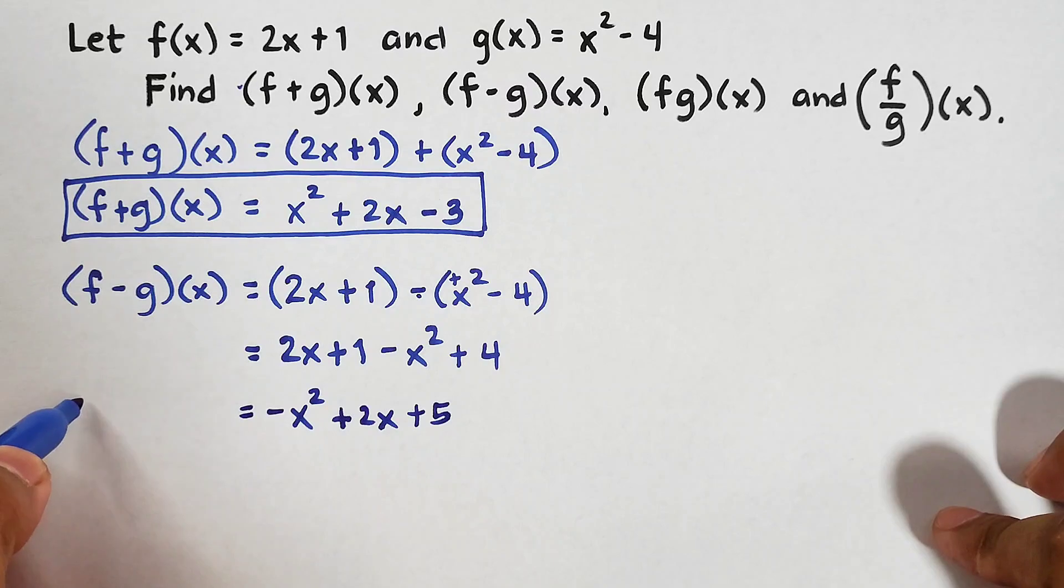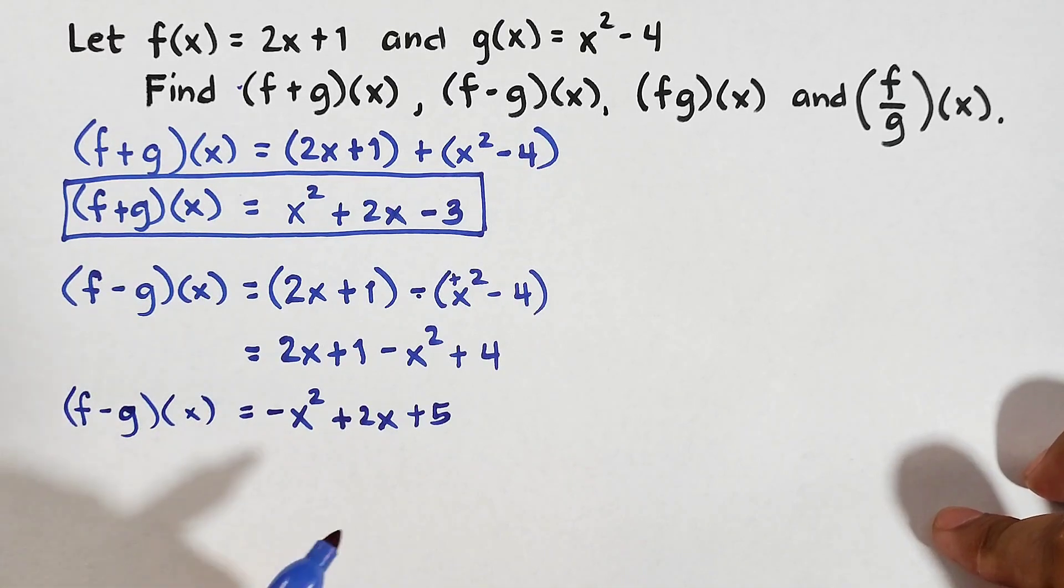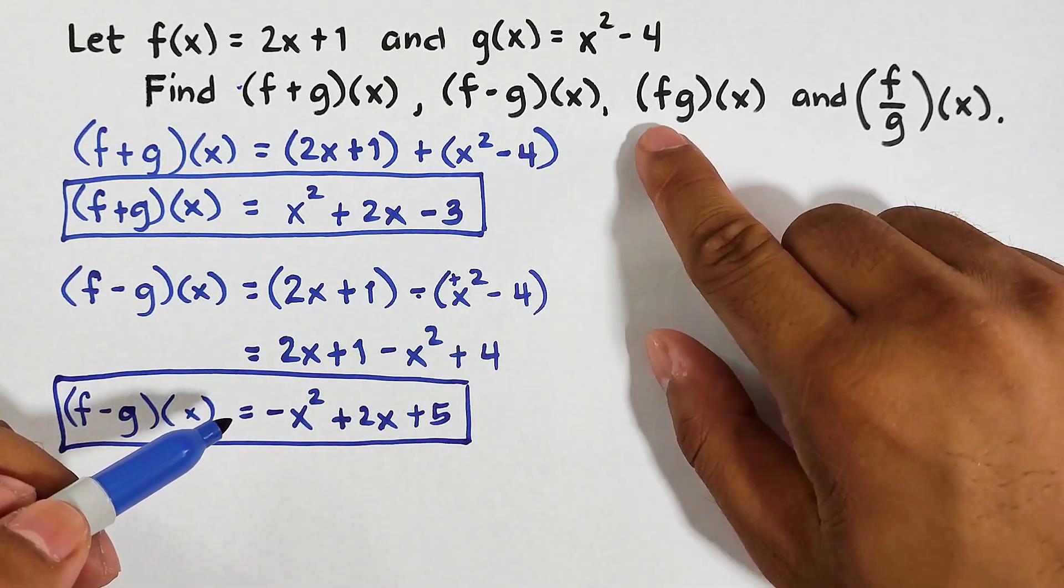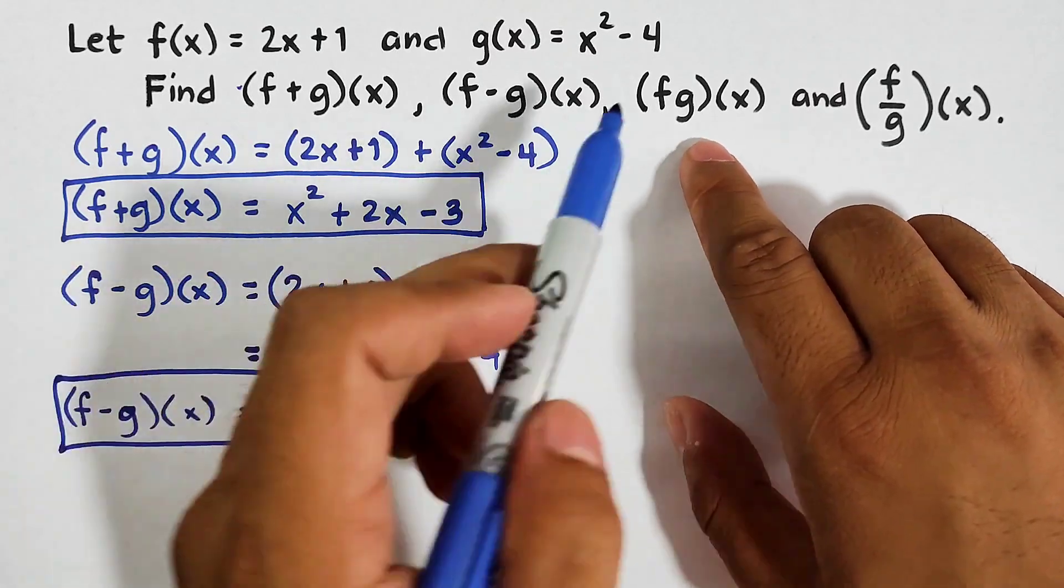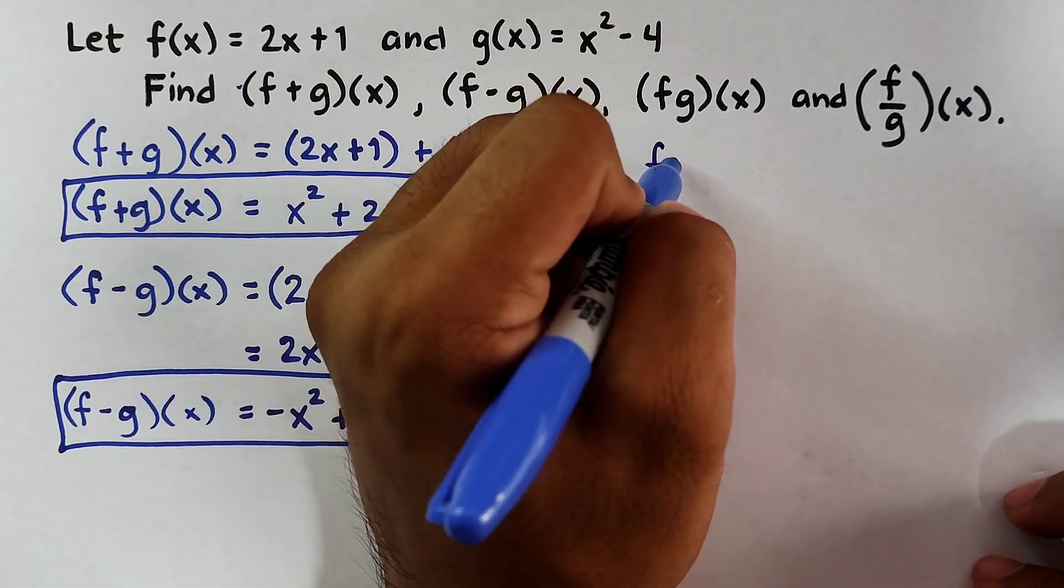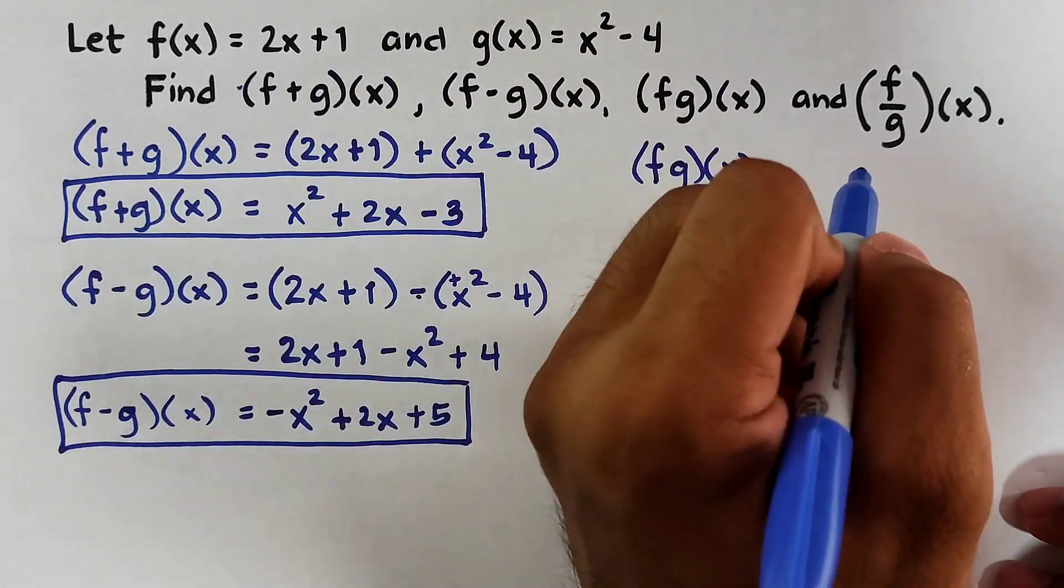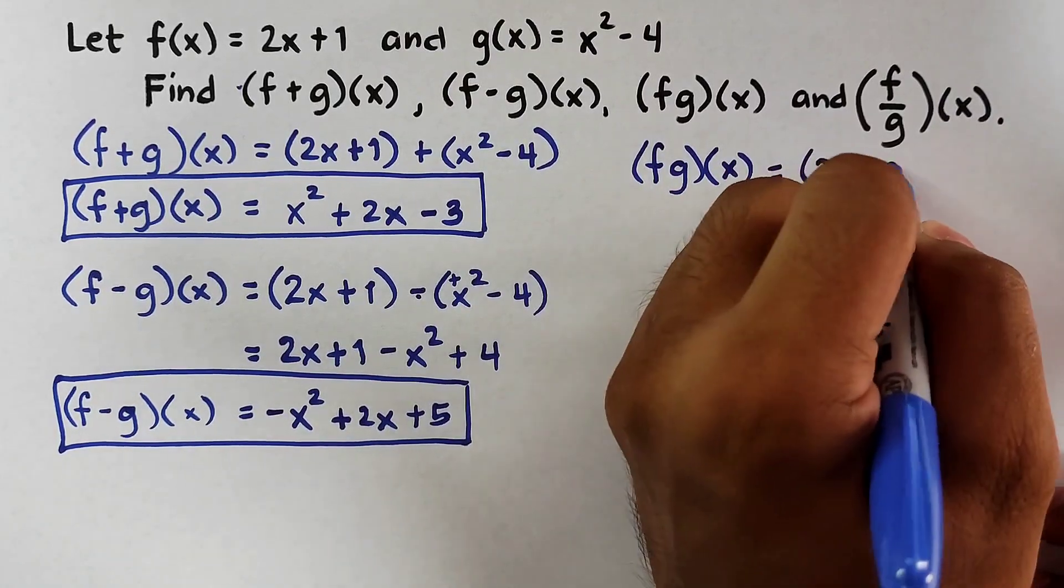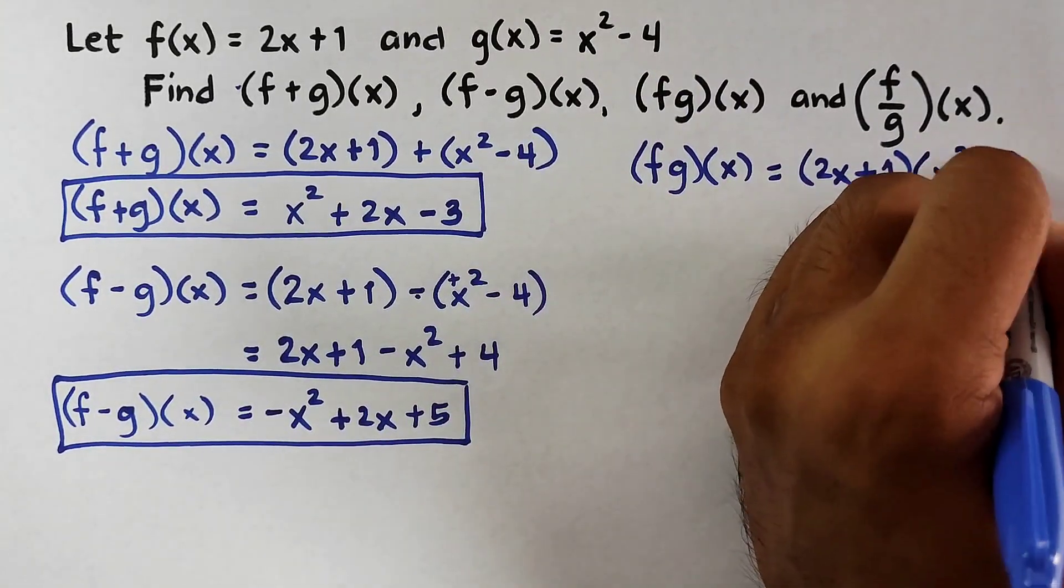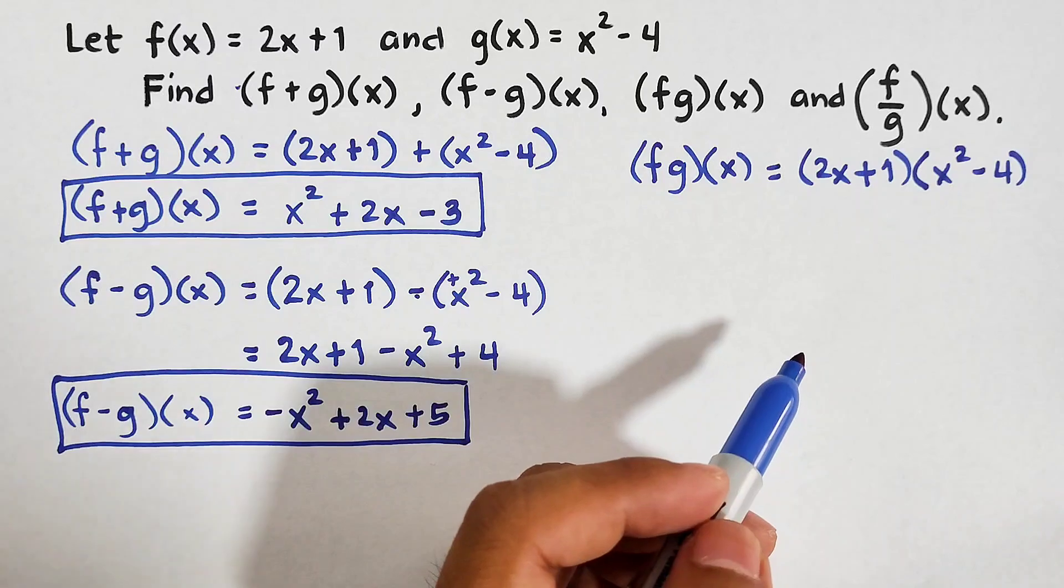So what we have here, the value of f - g(x) is simply -x² + 2x + 5, and this is now the answer for the second operation. Now let's move on with the third operation. This one is f·g(x), or simply f times g(x). So let's try f times g(x). This is multiplication. We will start with the f. Our f is 2x + 1. We will substitute that, and then for the g, we have x² - 4. There's no addition or subtraction because this is multiplication. Since we have two binomials, we will use the FOIL method.